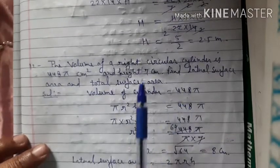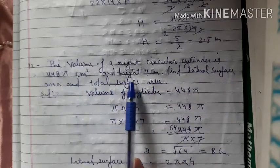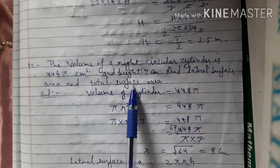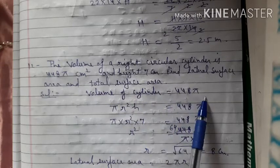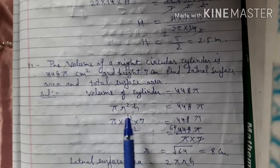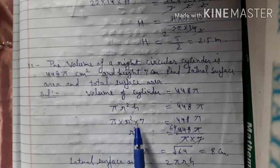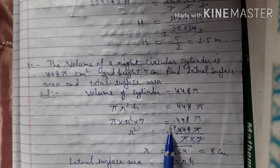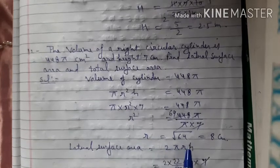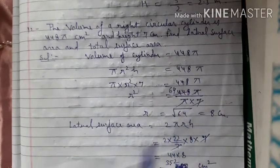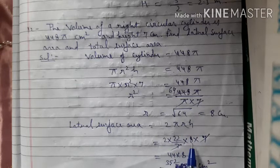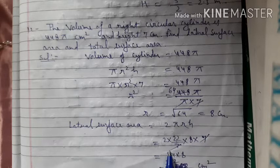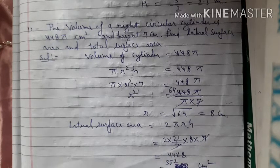Question number 12: volume of a right circular cylinder is 448π cm cube and height is 7 cm. Find lateral surface area and total surface area. Volume = πr²h = 448π, so r² × 7 = 448, r² = 64, r = 8 cm. Lateral surface area = 2πrh = 2 × (22/7) × 8 × 7 = 44 × 8 = 352 cm square.